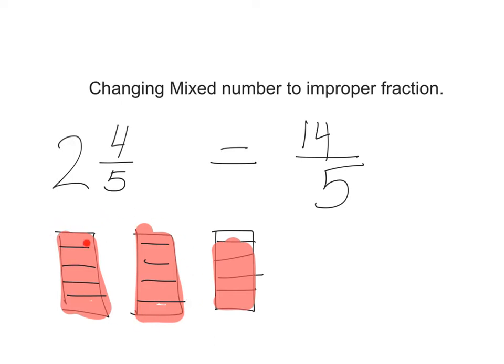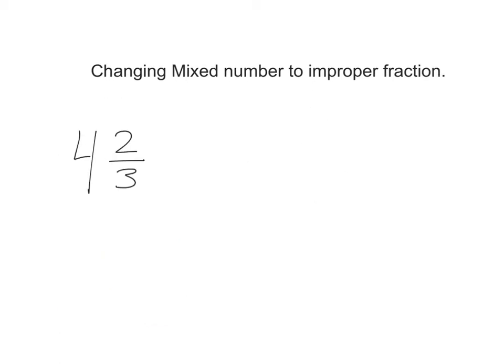Thinking about that counting strategy, can you look at these numbers and see a simple method for us to calculate the numerator? We're going to try that on the next one. So here we have another example, 4 and 2 thirds. Pause the video, draw this out, and get your improper fraction. Go ahead and pause now.